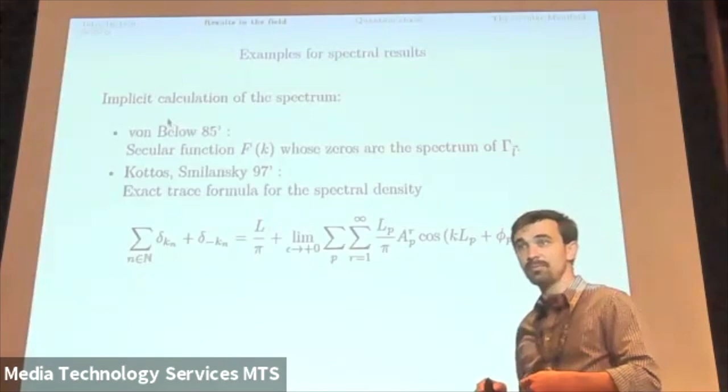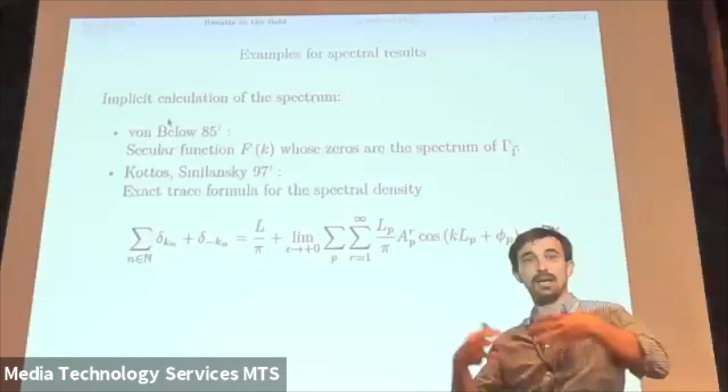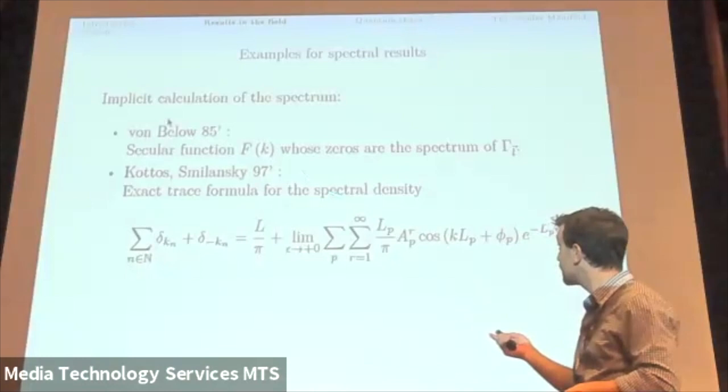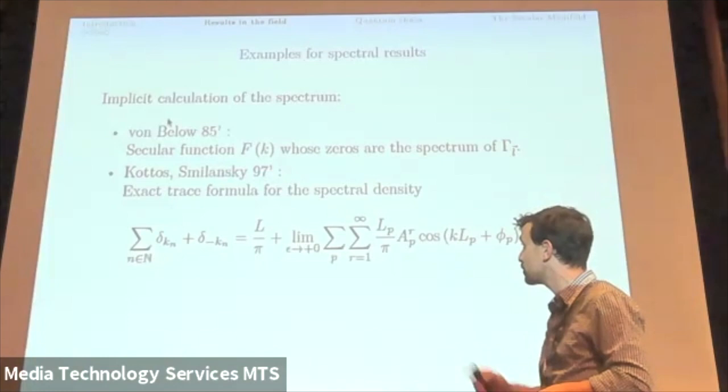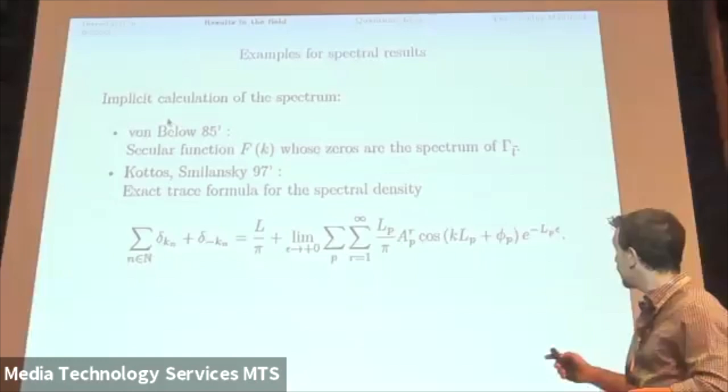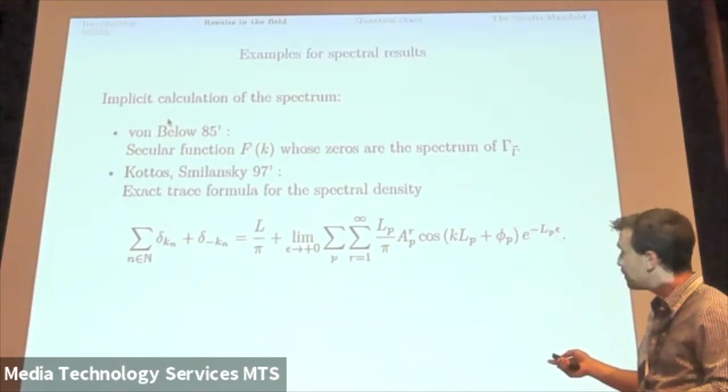Now, if you want to do something more fancy, if you want some kind of spectral averages, more data, it's more convenient to use the spectral density, for which we have an exact trace formula from '97 by Kottos and Smilansky. And this is the exact trace formula. And the thing that I wanted to explain here is that this sum over p is periodic orbits. This is where the geometry of the graph kicks in.